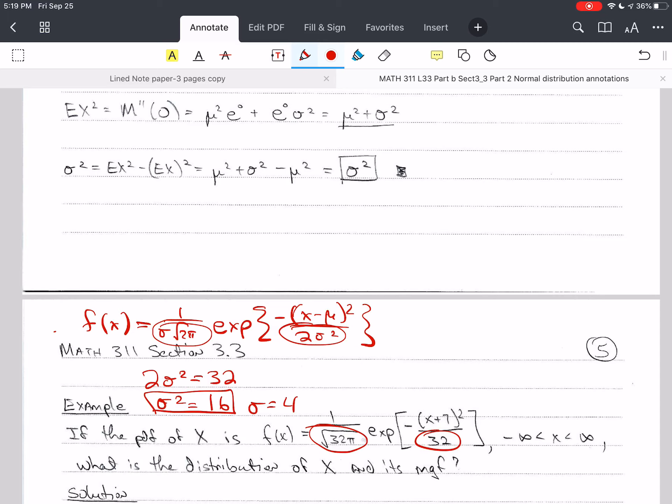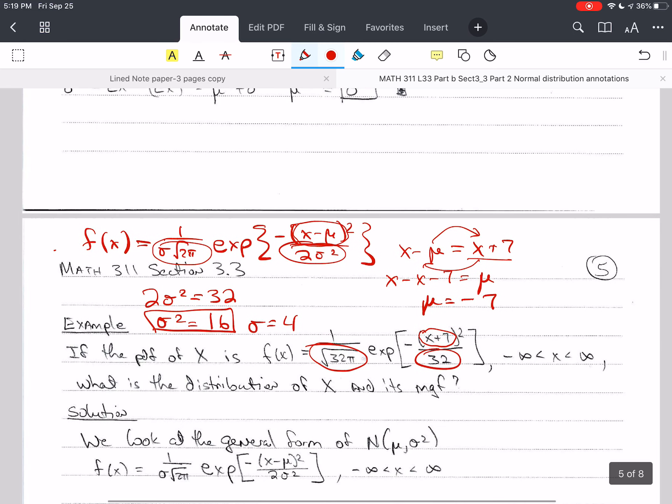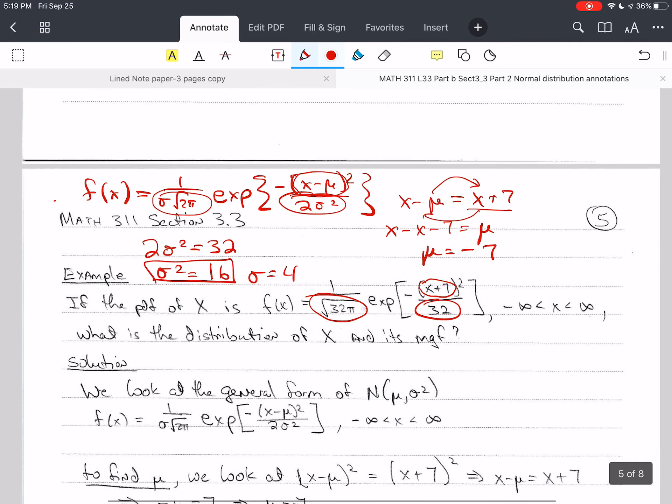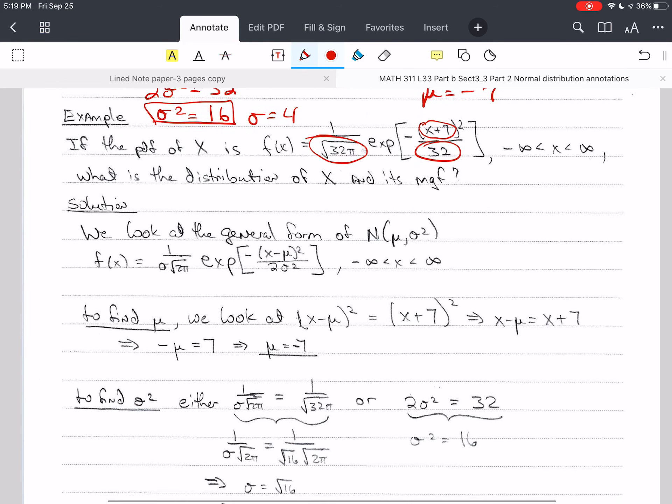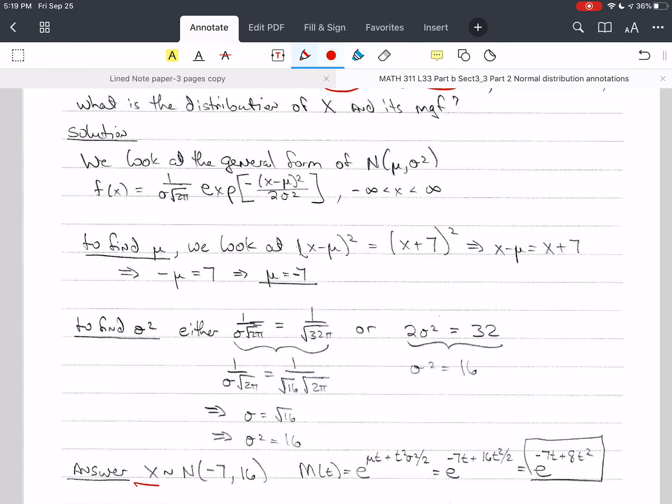Now I want mu. So x minus mu has to equal x plus 7. So if I solve for mu, I've got x minus x minus 7 equals mu. I added mu to both sides and I subtracted this from both sides. And so the x is canceled and I get mu equals negative 7. So my distribution that I get here is the distribution of x is a normal negative 7, 16.